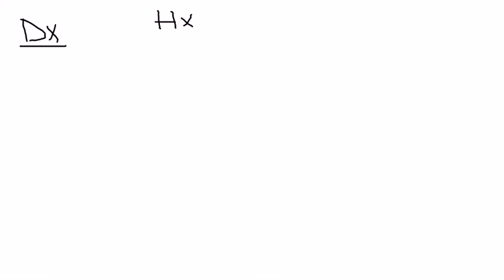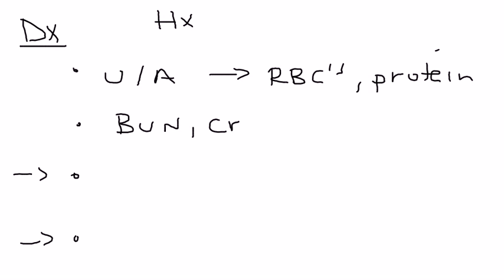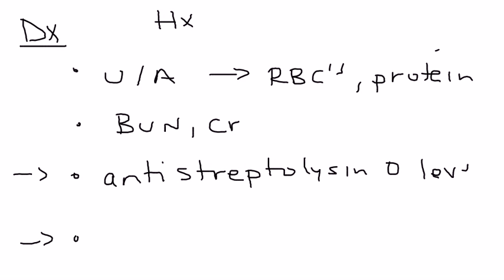Diagnosis involves several important tests. First is the history — talk to the patient about what happened in the last month. Next is a urinalysis, checking for blood, red blood cells, and protein, which is a very diagnostic clue. You also check kidney function, which indicates the degree of renal insufficiency involved.